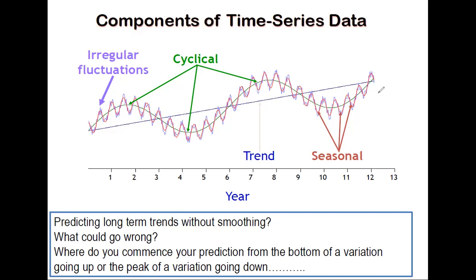Even though the data is oscillating, the general trend is still going up, as illustrated by the trend line. This upward, downward, or stationary motion of the observed data is what we refer to as the trend — also called the secular trend.